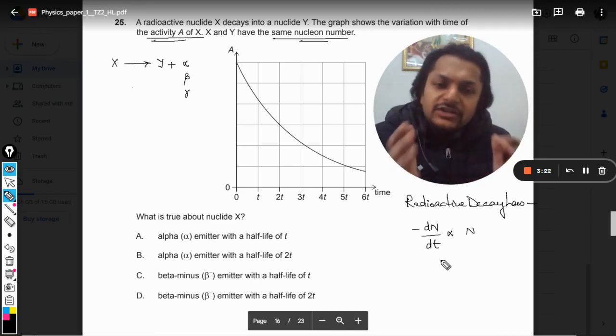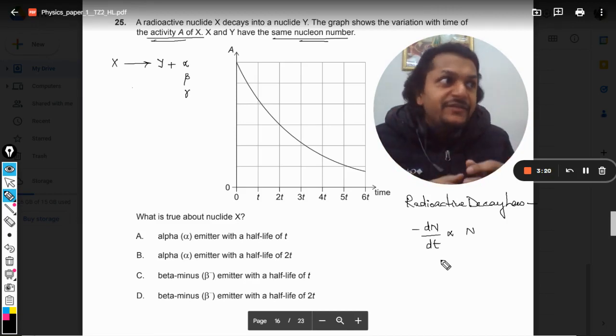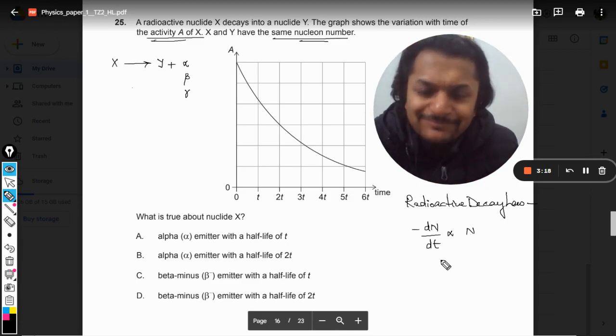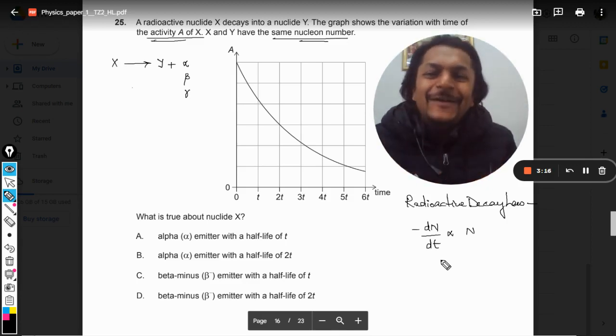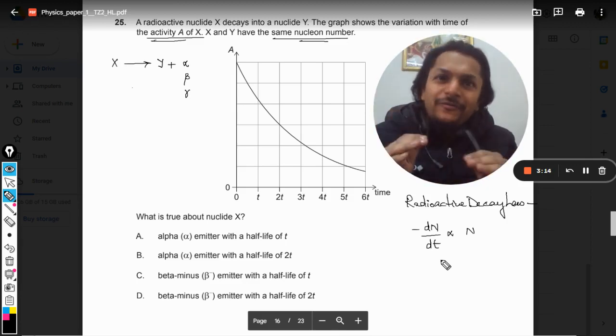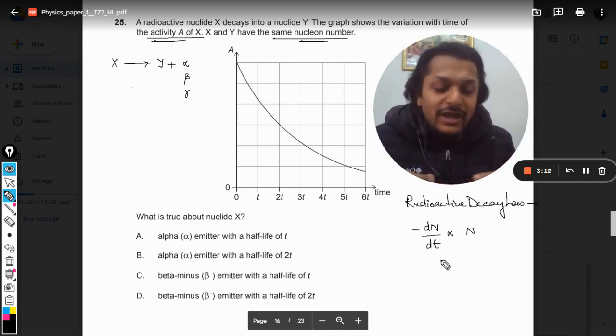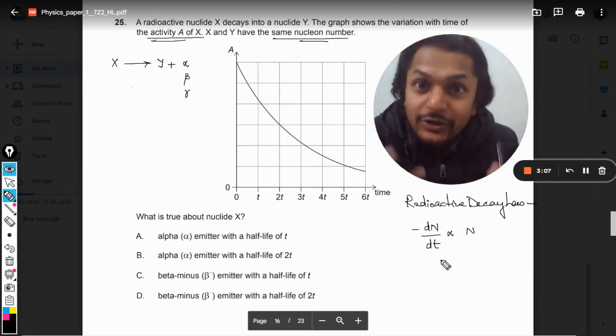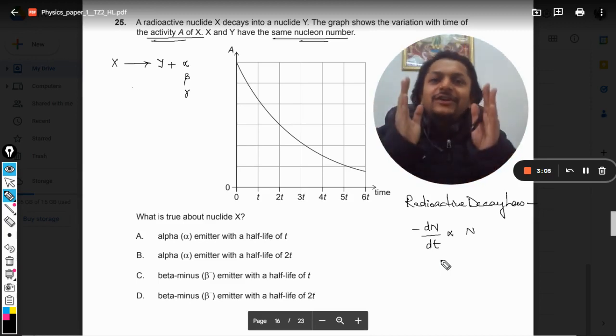It's like a child eating a chocolate - a weird example but yes - when the chocolate is more they are eating more, and as the time goes on and chocolate keeps reducing, your speed of eating chocolate also reduces. Similar is the case with radioactive decay.